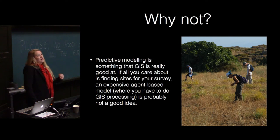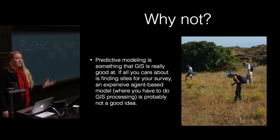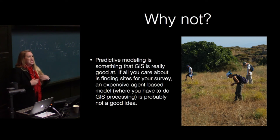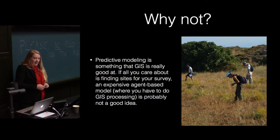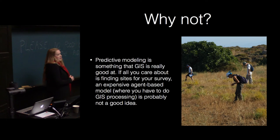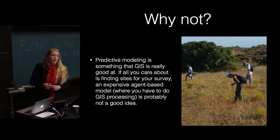Predictive modeling is really good at using GIS to look at where you might find things. It's a static kind of landscape — you don't need things to interact to see where things would be. If all you care about is finding sites for your survey, an agent-based model is an expensive approach. I don't mean it costs money — the platforms are free — but it costs your time, and if you're anything like me, your time is more valuable than spending it on a worthless model.